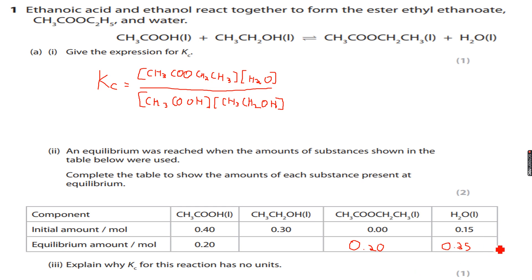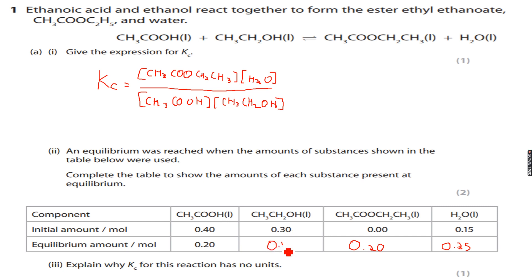There was already 0.15 moles of water, so with 0.2 more formed, we have 0.15 + 0.2 = 0.35 moles of H₂O. And 0.2 moles of ethanol (C₂H₅OH) reacted, so since we started with 0.3 moles, 0.1 mole is left — because 0.3 minus 0.2 is 0.1.